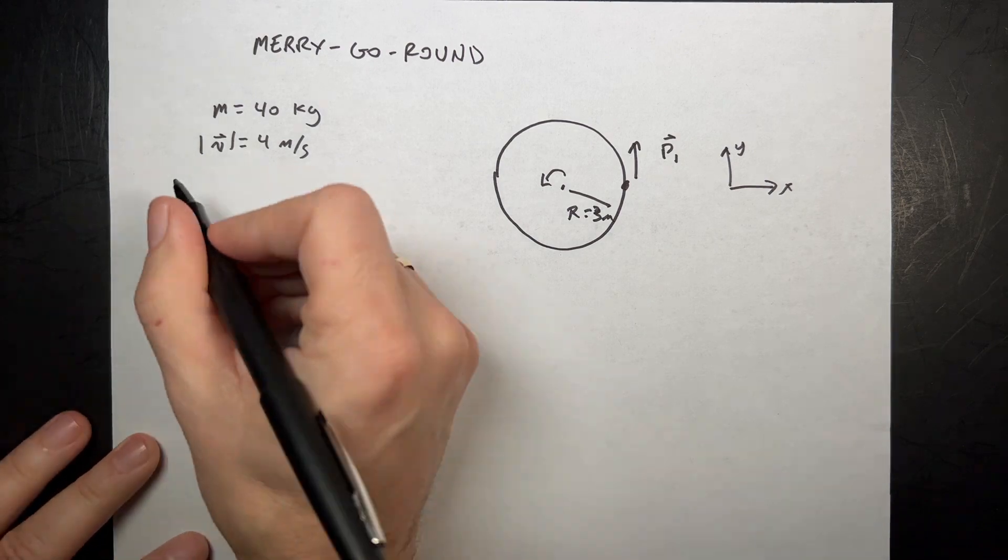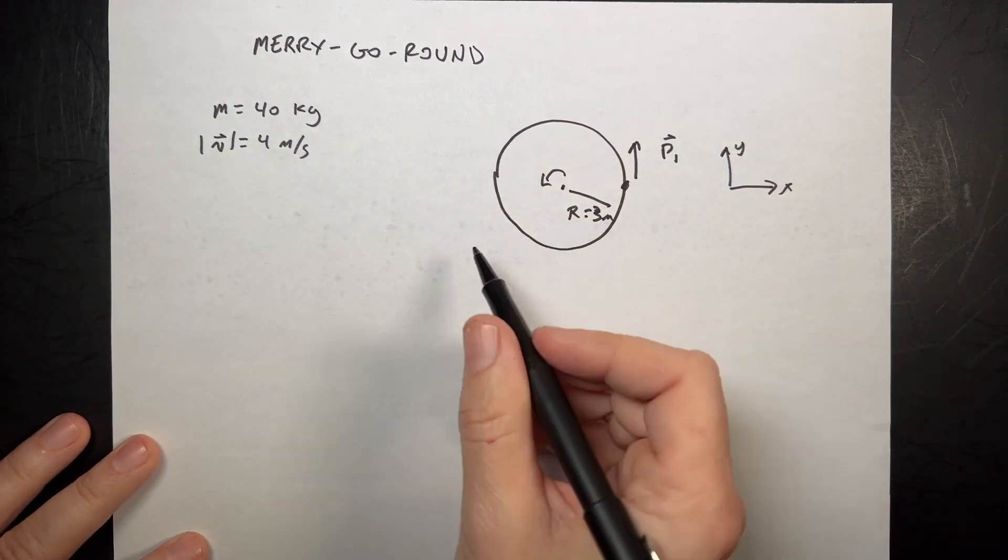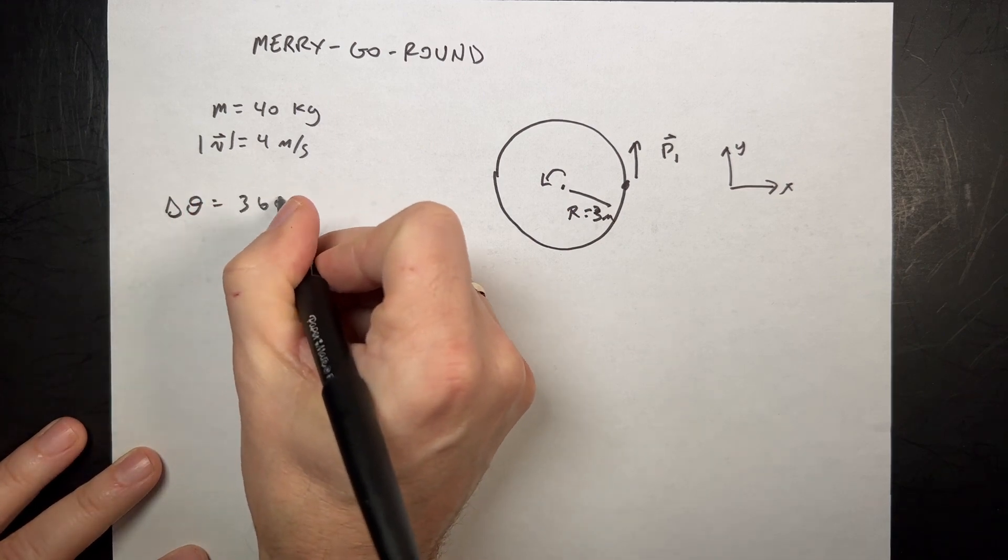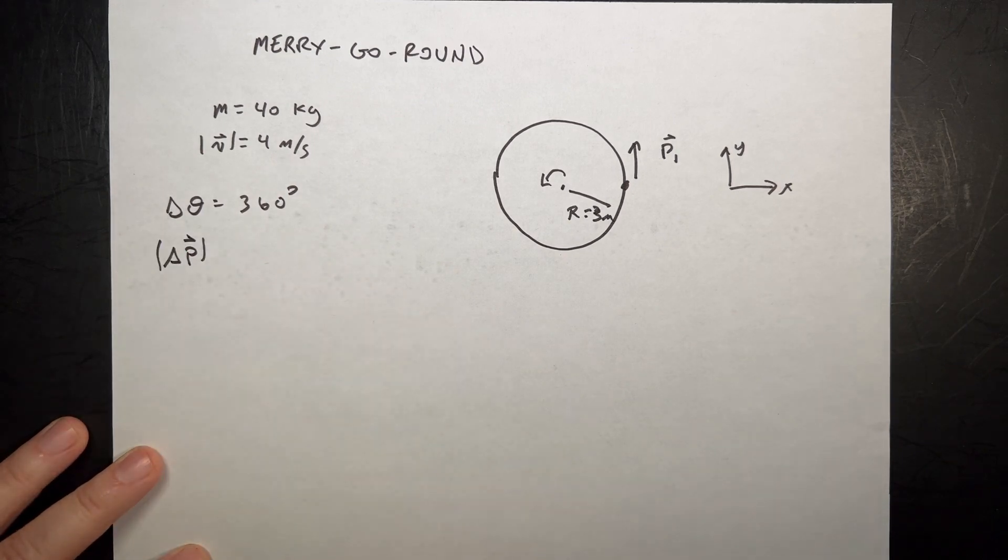Now suppose that the child goes all the way around, so delta theta is 360 degrees. What's the change, the magnitude of the change in momentum?